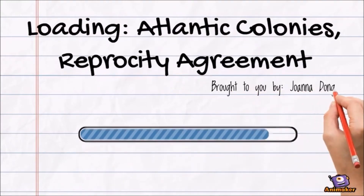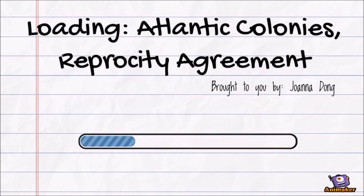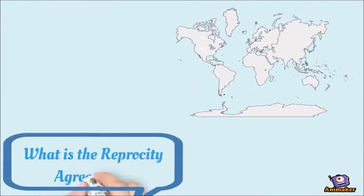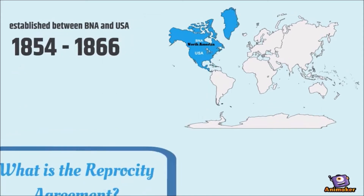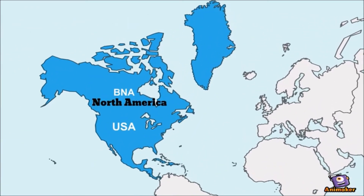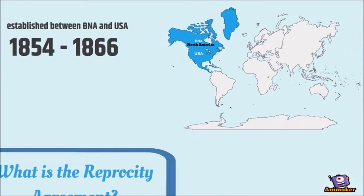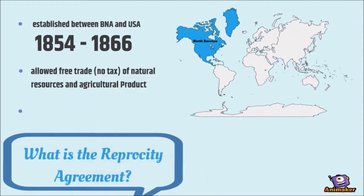Hi, my name is Joanna, and today we're going to be talking about the 1854 Reciprocity Agreement in the Atlantic colonies of Canada. It is a treaty established from 1854 to 1866 between British North America, or what is now Canada, and the USA. This treaty allowed the free trade of natural resources and agricultural products between the two.